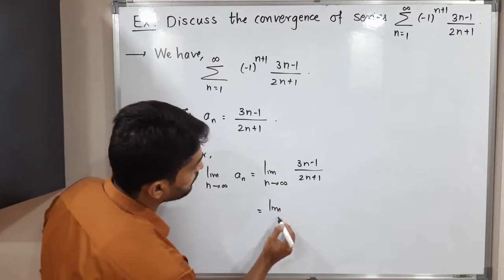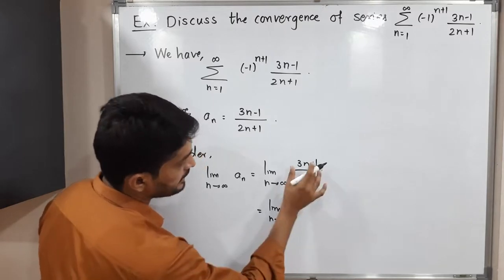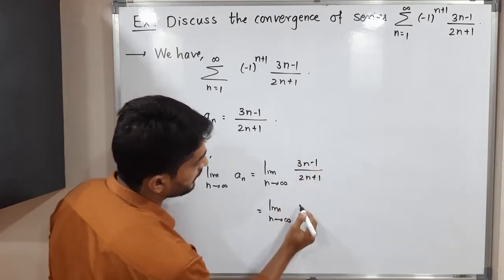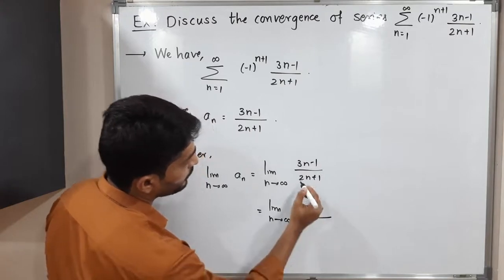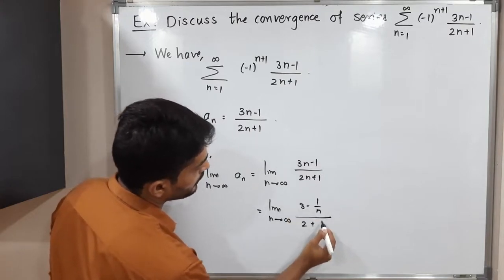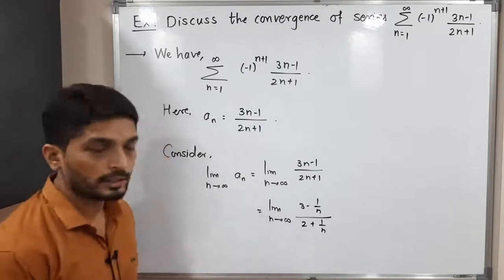So this is equal to limit n tends to infinity. Let us divide numerator by n. 3n by n is 3 minus 1 by n. That means, this thing we will have 2n by n, 2 plus 1 by n. So let us apply the limit.